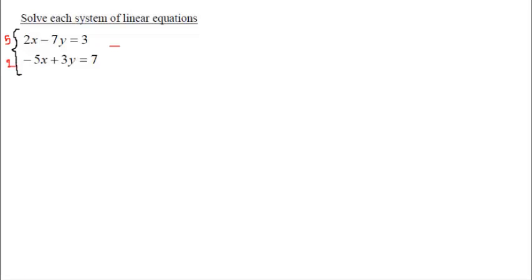And this whole equation will look like 2 times 5 would be 10x minus 35y equal to 15. And then here we get minus 10x plus 6y is equal to 14.